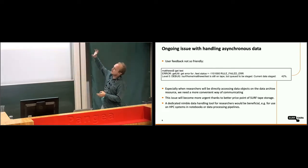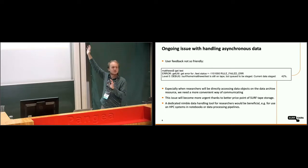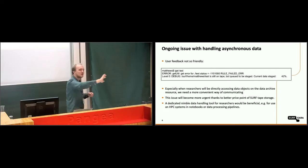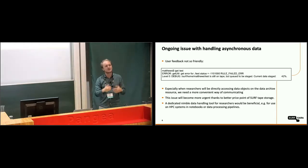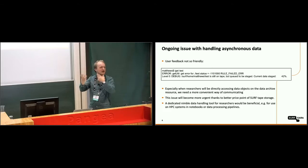Previously, when you did an iget and tested, you got a big error message, and in the end you saw something like 'your data is being staged' — meaning a robot arm is getting your data and trying to put it on the disk cache so you can retrieve it. There are some percentages shown, but you have to continuously do an iget to get the status of the data. Especially if you want to work on high-performance computing systems, it's annoying because it just doesn't work in your workflow.